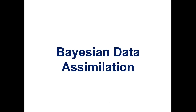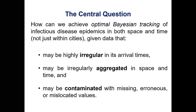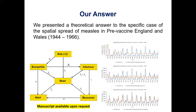Moving on to Bayesian data assimilation: a more mature modeling effort was done for measles in pre-vaccine England and Wales. The central question is: how can we achieve optimal Bayesian tracking of infectious diseases in both space and time — not just with a connected network of cities — given that data is presented irregularly, is highly aggregated, and has uncertainties or missing values? Bayesian data assimilation methods allow us to optimally track the spatial spread of a disease.